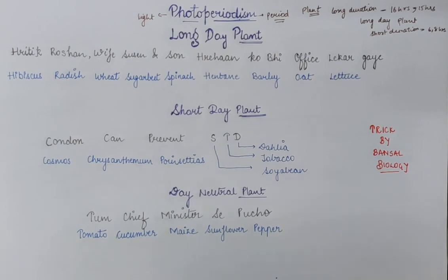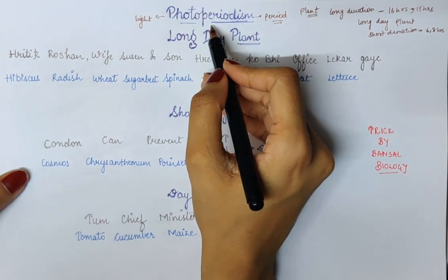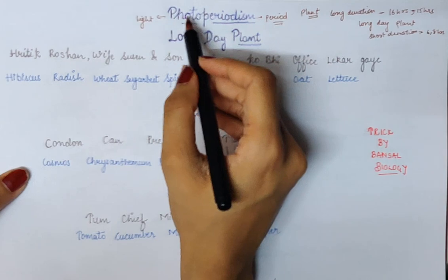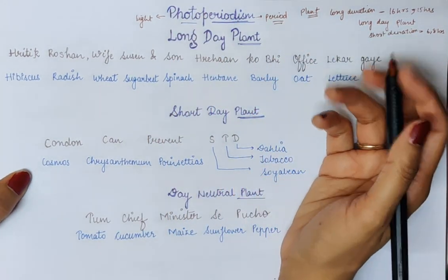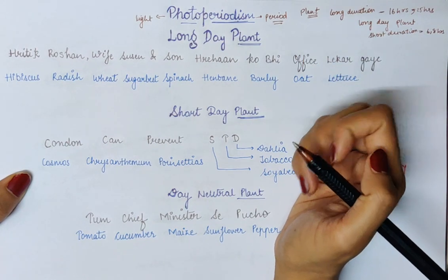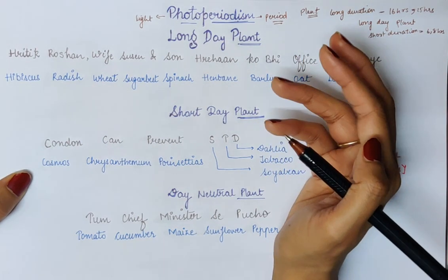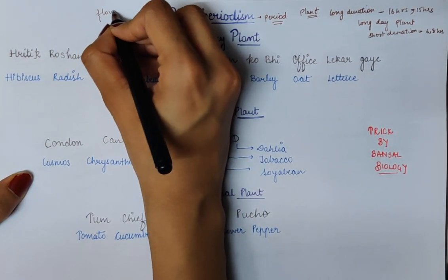Hello guys, welcome back to my channel. Today's topic is photoperiodism and its mnemonic. So what is photoperiodism? From the name we know that 'photo' means light and 'periodism' means period — how many hours of light we have to provide a plant so that it can show flowering.